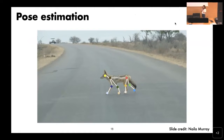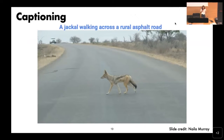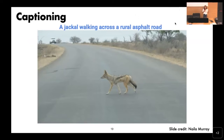Pose estimation can mean many things: 3D or 2D pose estimation in terms of rotation and translation relative to the camera, or given a skeleton, localizing the joints in either 2D or 3D. Captioning is also starting to work: given an image, outputting natural language text that describes the content. This goes beyond a predefined set of categories, which is great, but it's still limited by language to express what's inside.